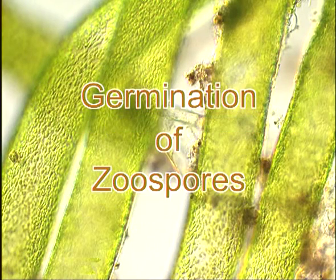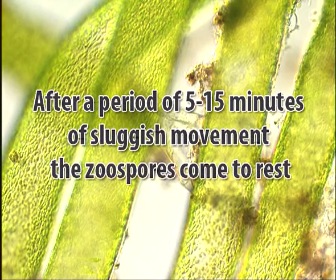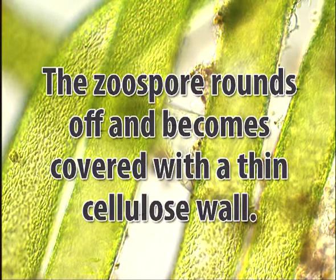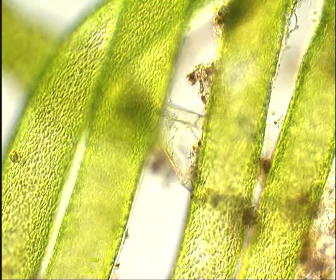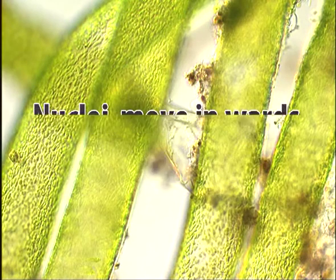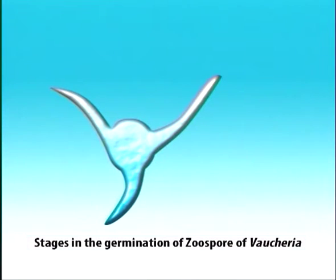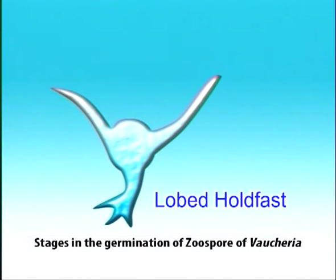After a period of 5 to 15 minutes of sluggish movement, the zoospore's flagella become motionless and then vanish completely. The zoospore rounds off and becomes covered with a thin cellulose wall. At this stage, the chromatophores move outwards and nuclei move inwards. The zoospore then elongates in one or two opposite directions in the form of tubular outgrowths. One of these undergoes branching to form the colorless lobed holdfast, while the other continues to grow indefinitely to produce the yellowish-green tubular filaments.